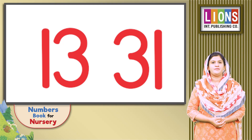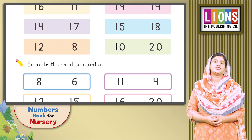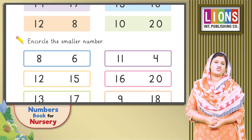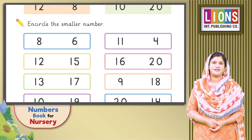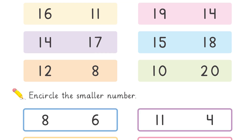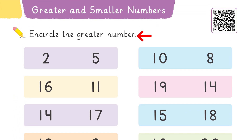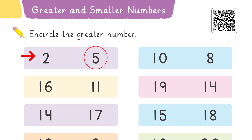Our book has a lot of interesting questions on this concept. On this page, the first question says: encircle the greater number. We have pairs of numbers and you are going to encircle the greater one. For example, we have two and five — which one is greater? Five! So you have to encircle five.